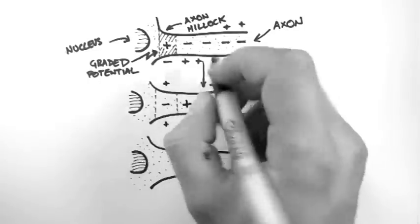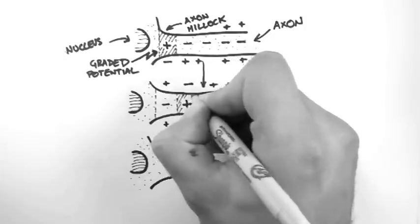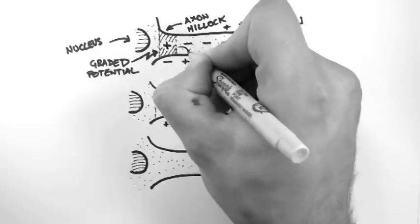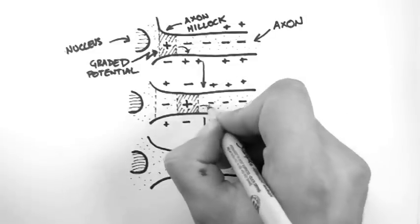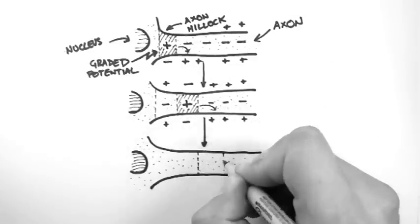This is enough to trigger the action potential in the next part of the axon. Meanwhile, the axon hillock returns to its resting membrane potential. So here's the charge flowing across here, and this positive charge flows into the next segment of the axon. This is known as local current flow.